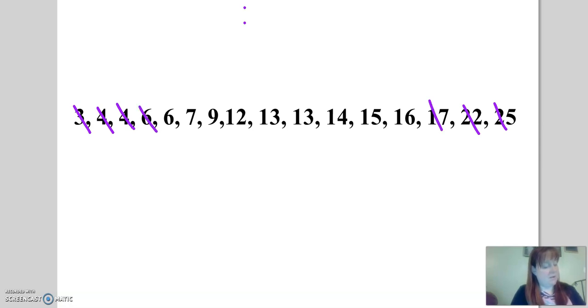If I cross off one here, I cross off one there, cross off one there, there, there, there. And I just keep crossing off until I get down to one or two numbers in the middle.